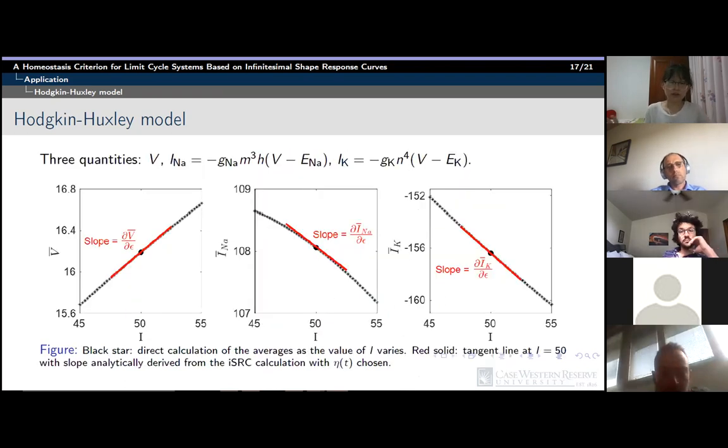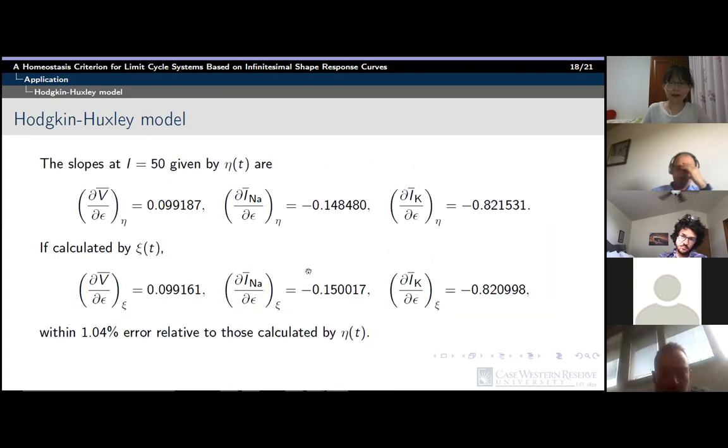Then to demonstrate the utility of the shape response curve for calculating the sensitivity of averages, we focus on three quantities: membrane potential, sodium current, and potassium current, as we change the value of the injected current. The black star represents the empirical average curves for the three quantities. The red trace shows the slope at i equal to 50, analytically calculated by our derivative formula, which fits very well to these empirical curves. So this shows the accuracy of the derivative formula. In this figure, eta is chosen to calculate the derivatives. If calculated by another ISRC solution xi, the differences between the derivative results are very small, confirming that the sensitivity is independent of the measurement way of shape response.